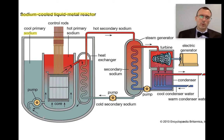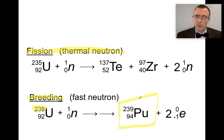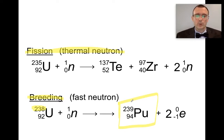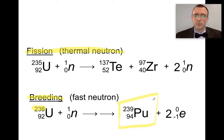Sodium-cooled liquid metal reactors are more efficient, but they generate plutonium, which is good if you want to use plutonium in your reactor — but it's also very good if you want to use that plutonium to create a nuclear bomb. Plutonium-239 is the most common material used in a nuclear fission bomb. However, if you want to make sure that no terrorist gets hold of your nuclear power plant for nefarious reasons, then you probably don't want to be breeding uranium-238 to plutonium-239.